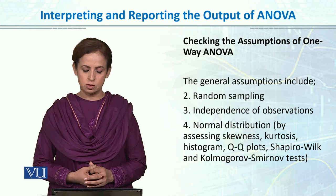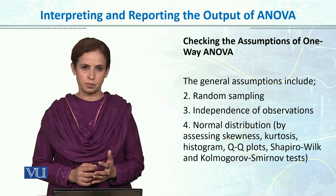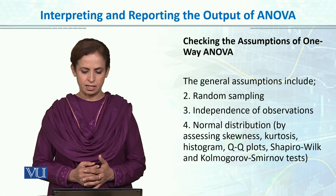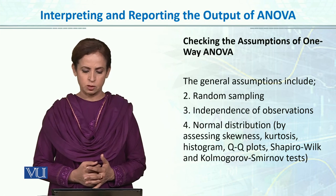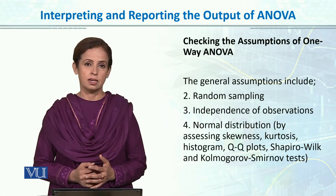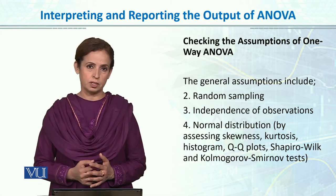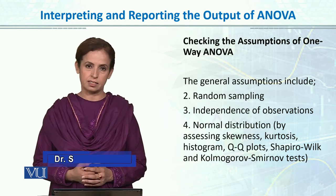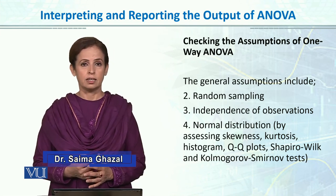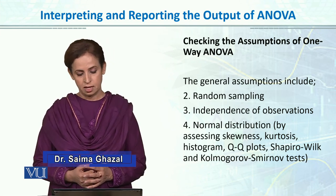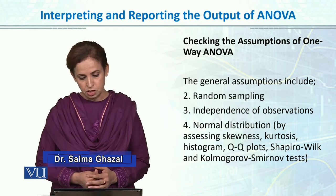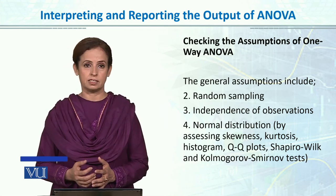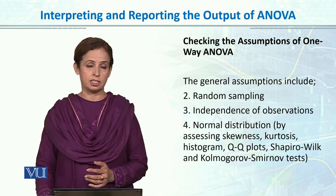The assumptions of ANOVA are our independence assumption, random sampling, and normal distribution. You can assess the assumption of normal distribution through skewness, kurtosis, PP/QQ plots, Shapiro-Wilk, and Kolmogorov-Smirnov tests, as we have done for the T-test.